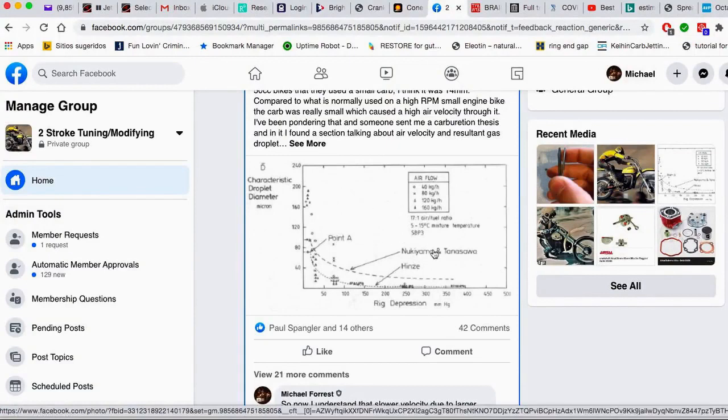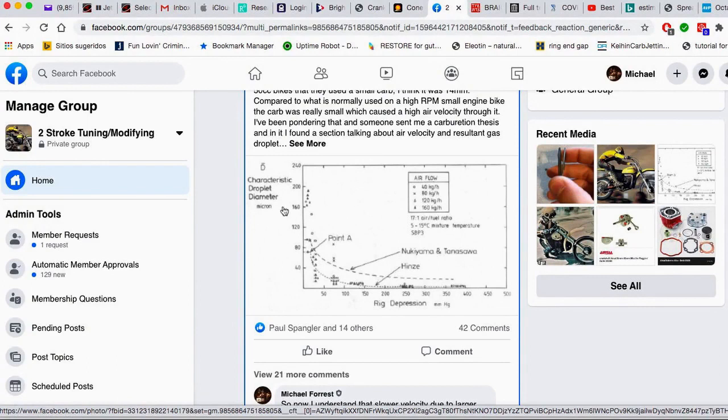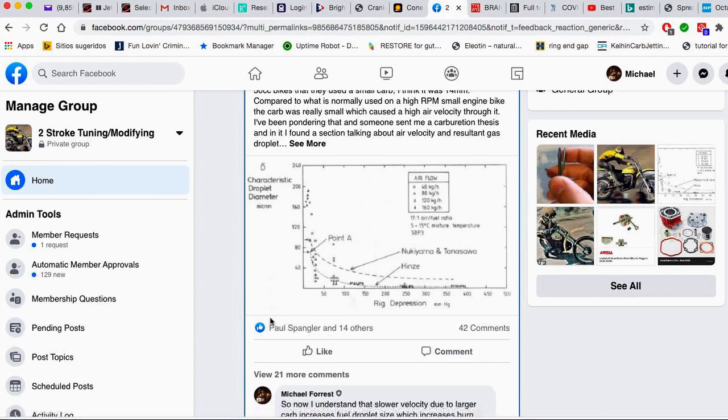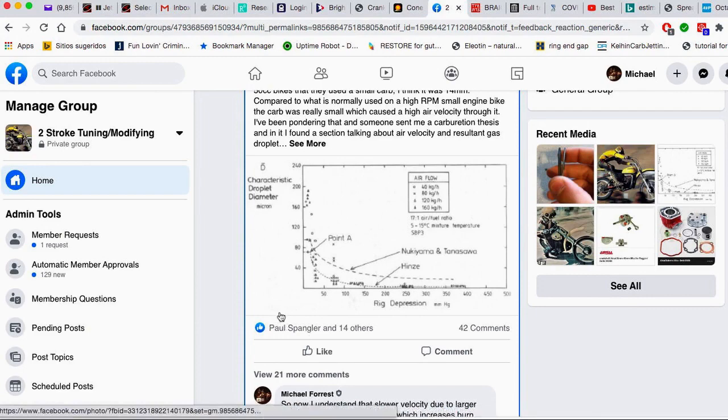Here's a graphic from a research paper, and it shows the correlation between air velocity and droplet diameter of the fuel. It's a little bit hard to see, it's a little bit gray, but it's there.